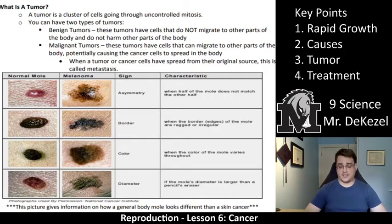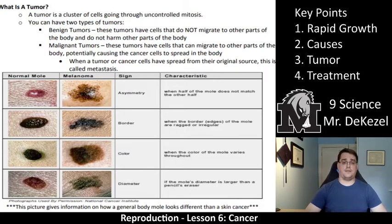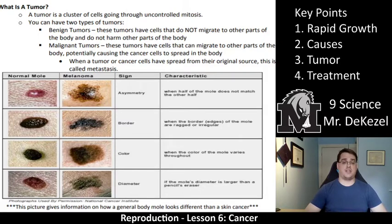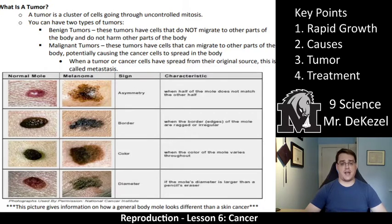When cancer cells have spread from their original source, this is called metastasis, or metastasizing. In your notes there is also information about how a regular mole might look versus what melanoma — cancer in the skin — might look like. A sign might be asymmetry, where it's not perfectly round. The border might not be completely clear or might be ragged. When the color of the mole is not completely the same throughout, that can be a problem.